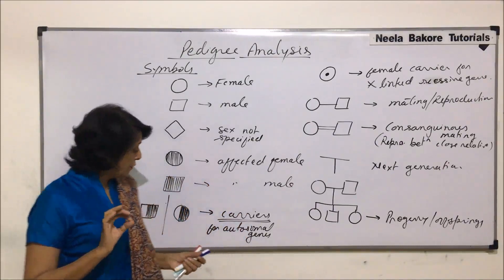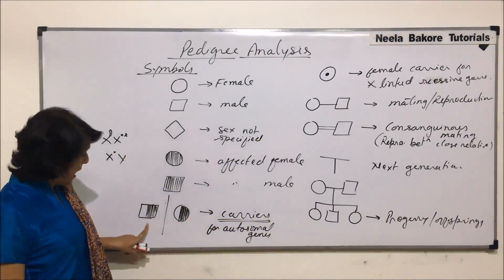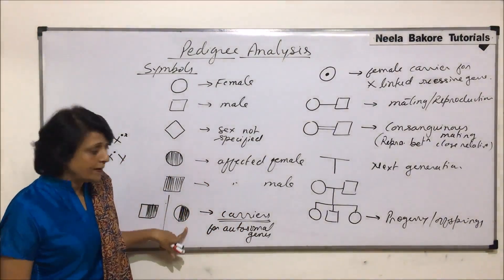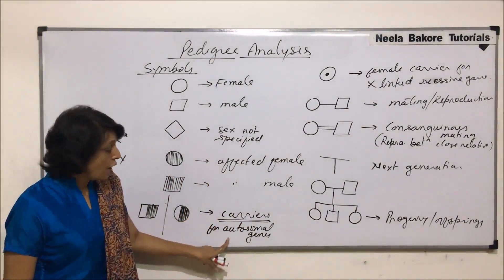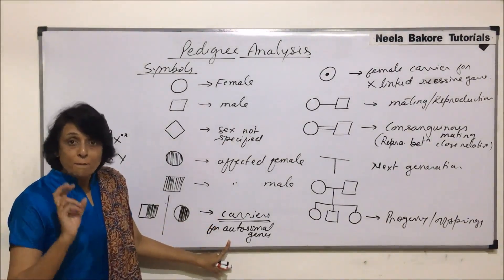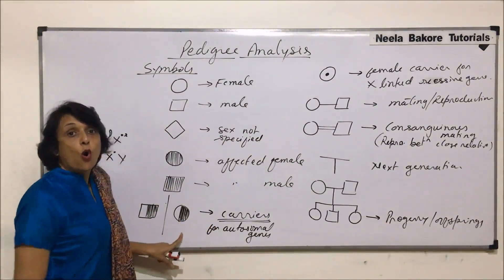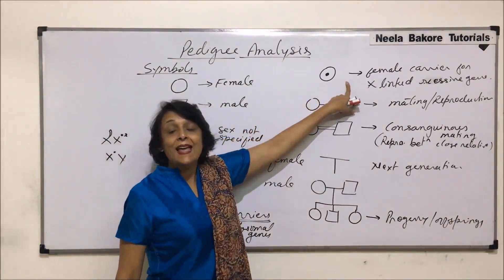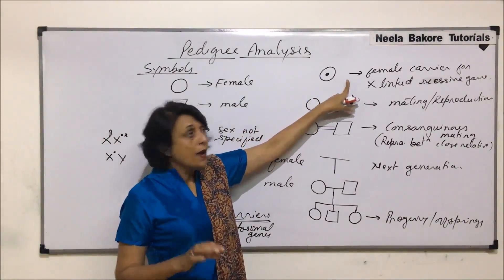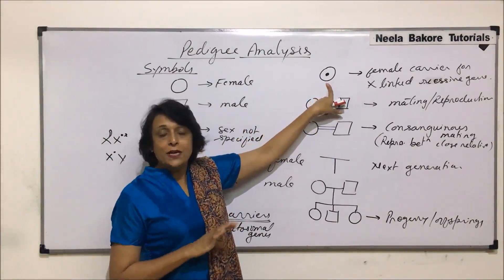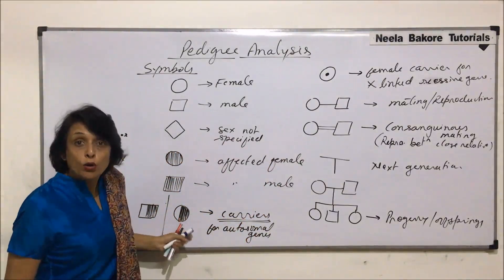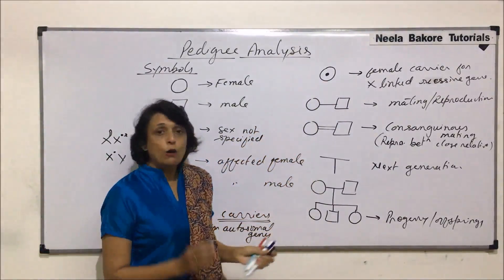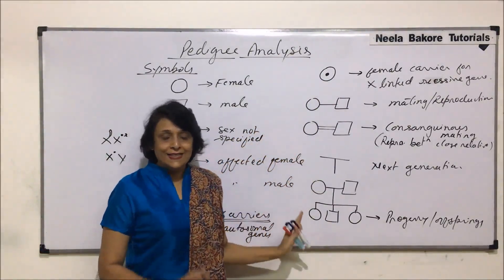The only confusing thing could be the carrier symbols: a half-solid square and a half-solid circle are used to represent carriers for autosomal genes. But the same half-filled circle symbol is also used to represent a female carrier for a sex chromosomal gene. The circle with a dot inside is the more appropriate symbol for that purpose, but the half-filled circle is also commonly used in its place.